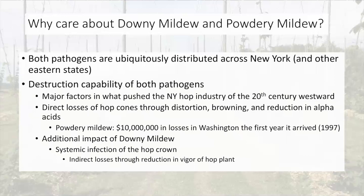Both pathogens are capable of causing direct loss through distorting and browning the hop cones. But downy mildew can also have the additional impact of causing systemic infection of the hop crown. The pathogen can get into the crown of the hop plant and exist there from season to season, causing indirect losses through reduction in plant vigor. Each season the hop plant gets less and less vigorous until one spring it simply won't push new shoots — and so it can kill the hop plant that way.